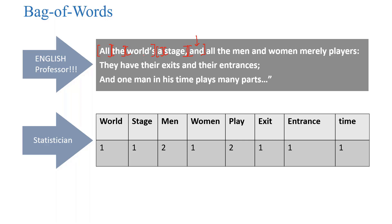After tokenizing and cleansing, we count the frequency of each word. For example, the word 'world' appears once, 'stage' appears once, and 'men' appears twice. We identify how many times each particular word is repeated in the corpus.